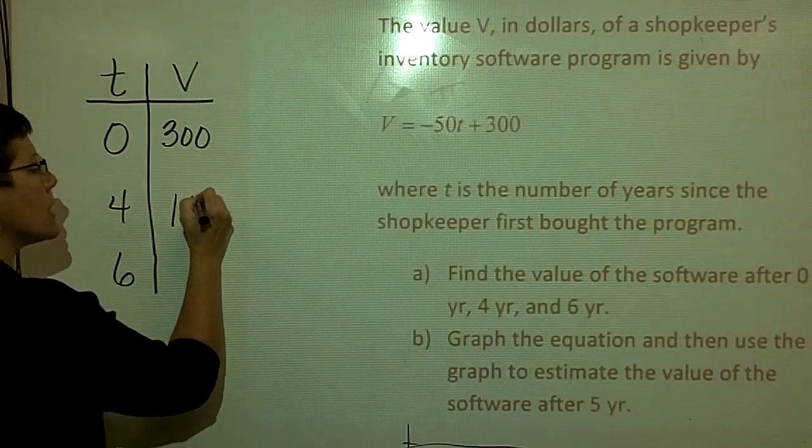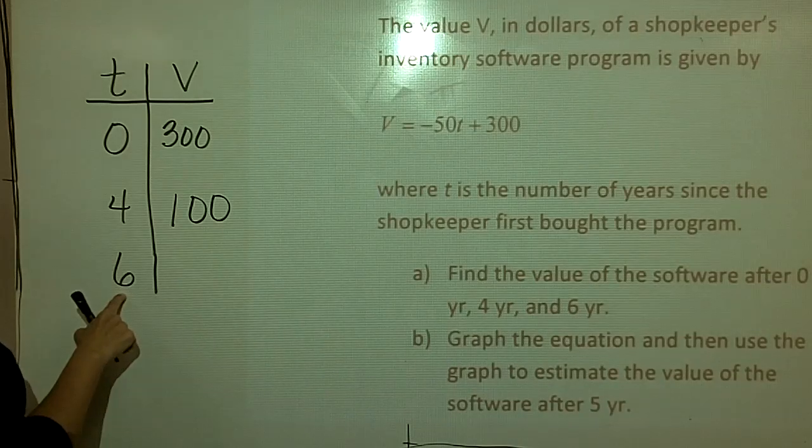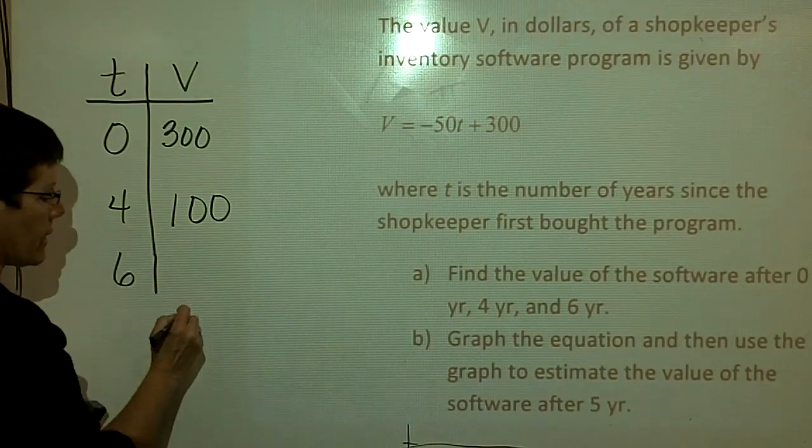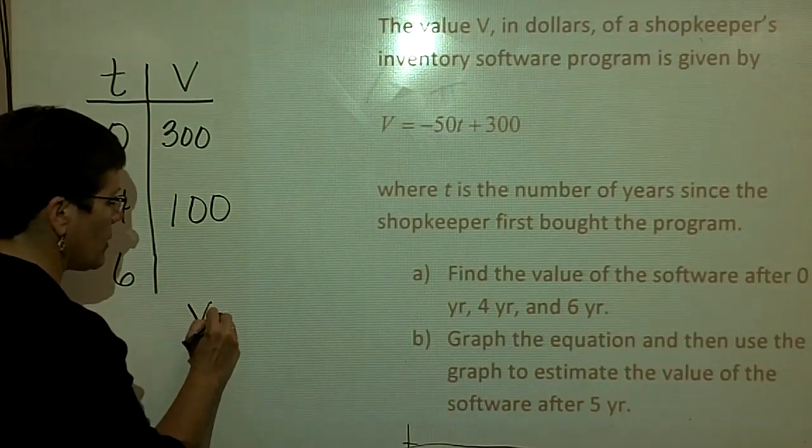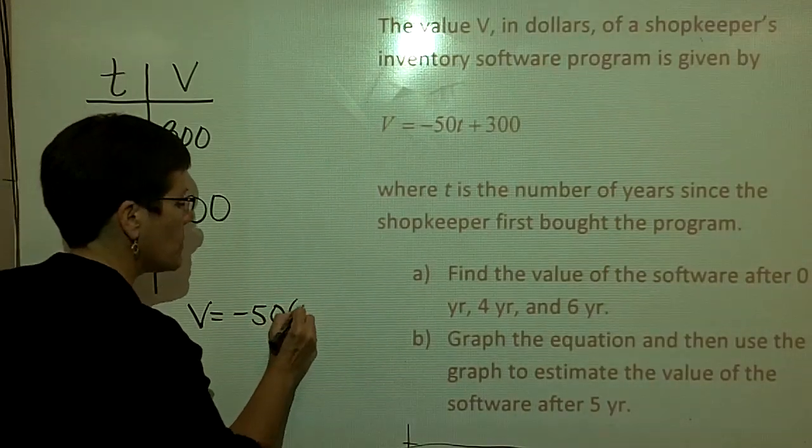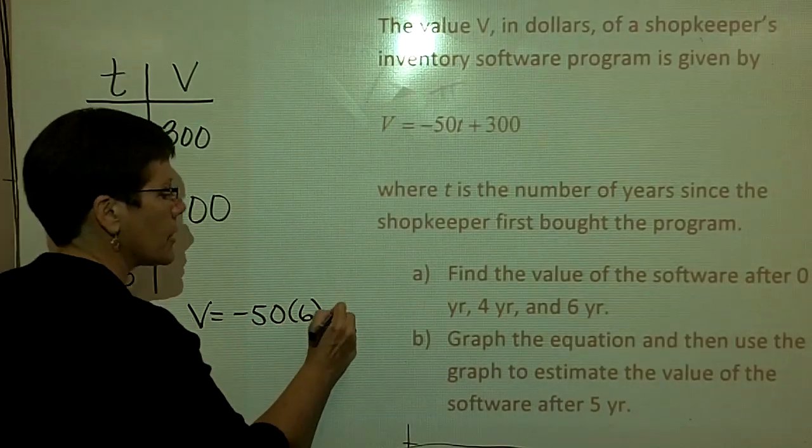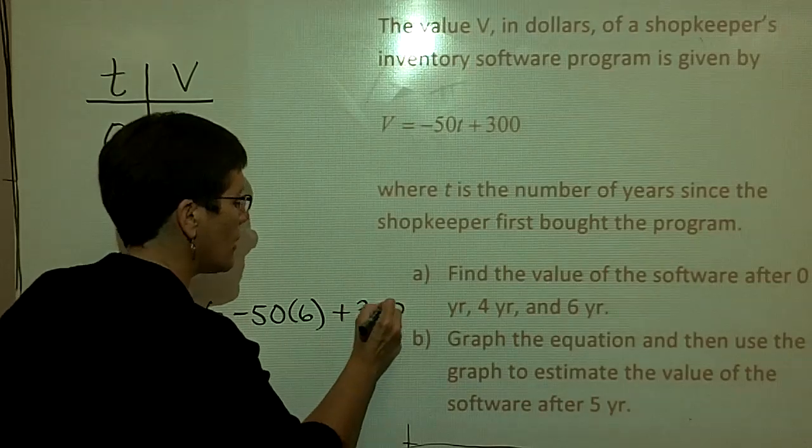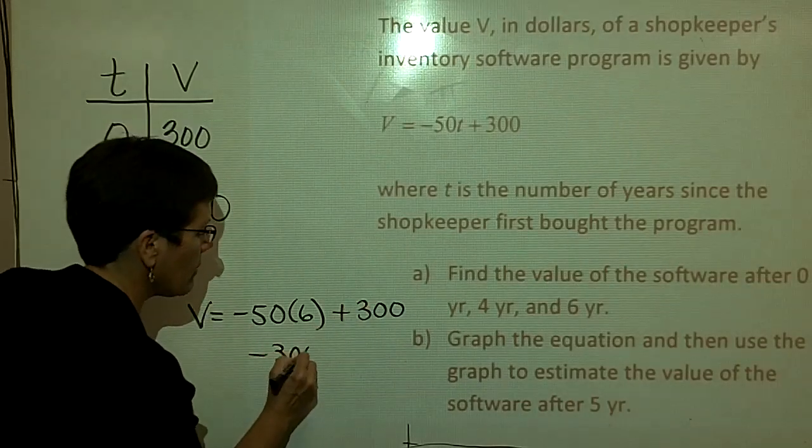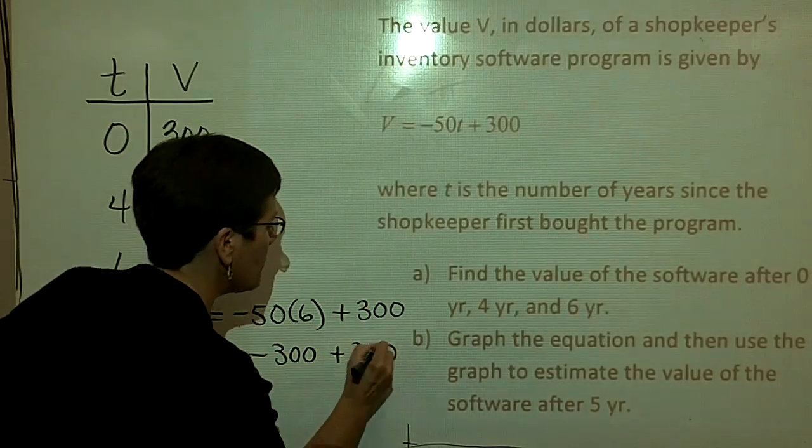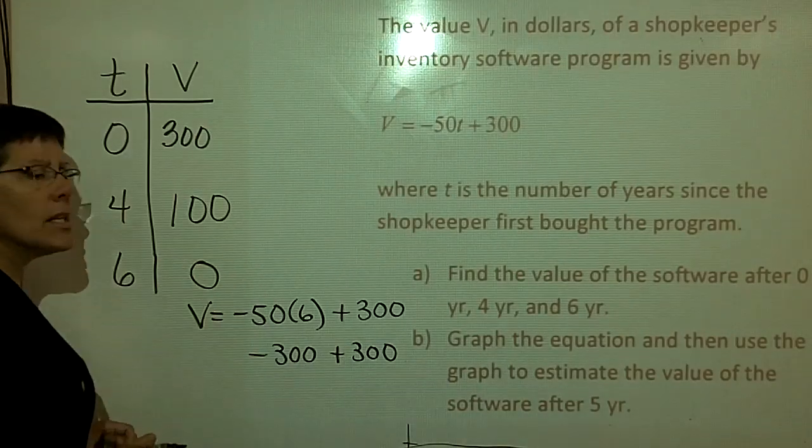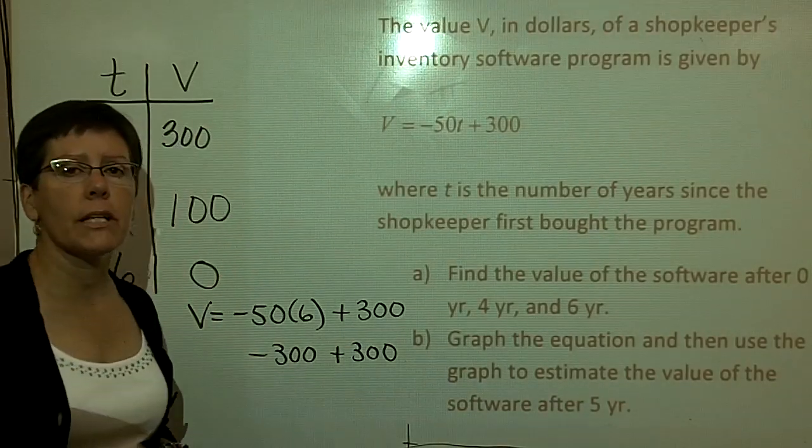And then when the timing is six years later, the value would be negative 50 times six, which is negative 300. And then I have to add 300 to that, and then negative 300 plus 300 is zero dollars. Must be that we've depreciated that software completely.